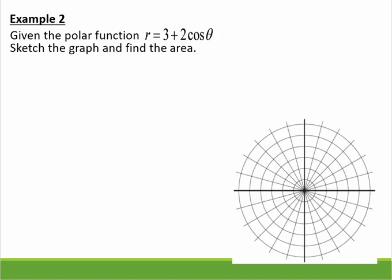Okay, let's graph this guy. r equals 3 plus 2 cosine theta. So since it's a cosine, it's left and right. 0 is going to get me 5. That's kind of my starting point.